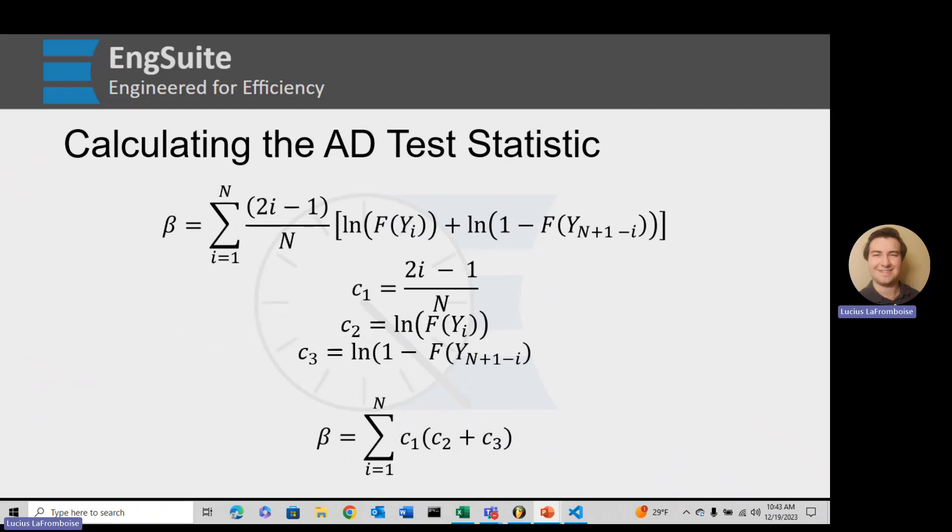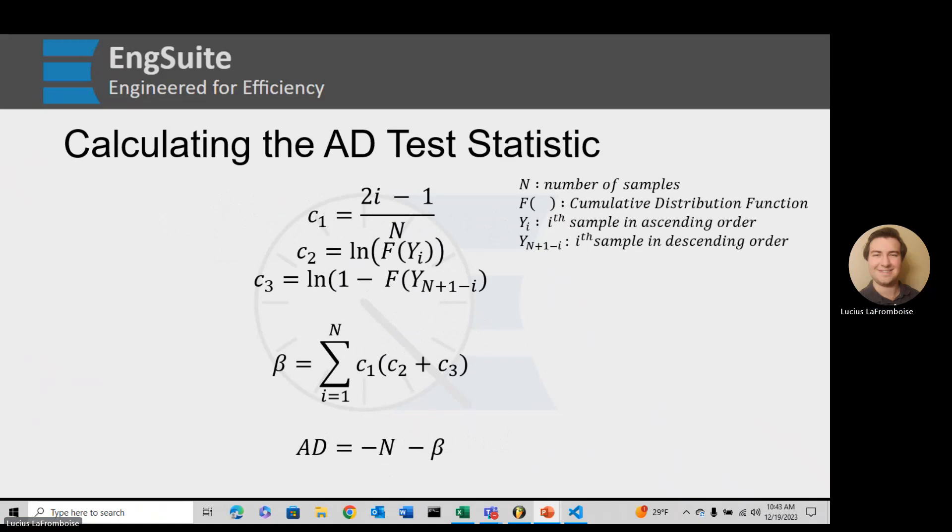So what we can do then is replace those in there, and we can say that beta equals the sum from I to N of C1 times C2 plus C3. Again, we have everything listed, where N is the number of samples, F of X is the cumulative distribution function, Y of I is the ith sample in ascending order, and Y of N plus 1 minus I is the I sample in descending order.